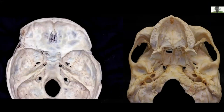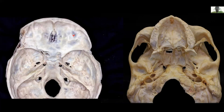As we know, the cranial base has an endocranial surface, which faces the brain, and an exocranial surface, which faces the nasal cavity and orbits. Both surfaces are divided into three parts: anterior, middle, and posterior.